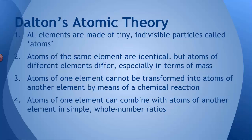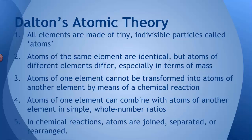Atoms of one element can combine with atoms of another element in simple whole number ratios. So atoms go together in simple whole number ratios to make compounds. And finally, in chemical reactions, atoms are joined, separated, or rearranged. And that's really all that a chemical reaction is.